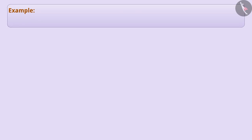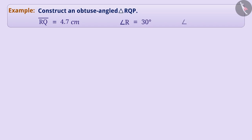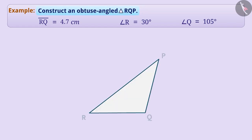Construct an obtuse angle triangle RQP where the length of RQ is 4.7 cm, angle R measures 30 degrees and angle Q measures 105 degrees. In triangle RQP, the side RQ lies between angle R and angle Q. Therefore, we can construct triangle RQP.